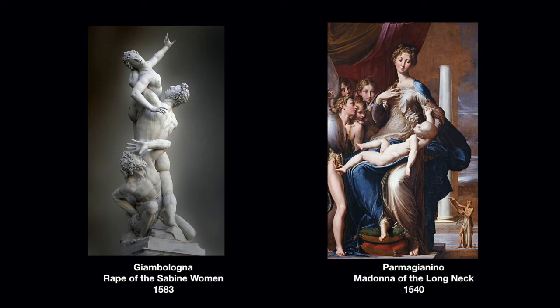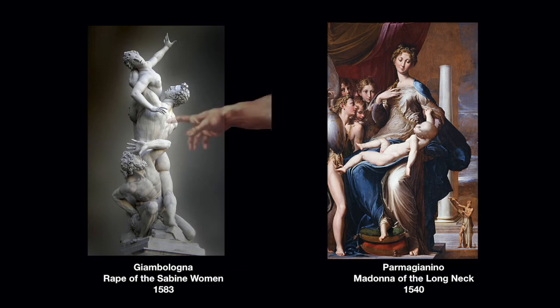Mannerism leads directly into the Baroque because mannerists had a flair for drama. On the left is a sculpture by John Bologna: a tall twisting composition you couldn't take in with one look like Michelangelo's David — you had to physically walk around it to understand the whole story. No longer contrapposto; this is twisting motion — a man stepping on another man while abducting a woman. Even the marble itself is flawed, with a big green stripe, rather than the perfect white marble of David.